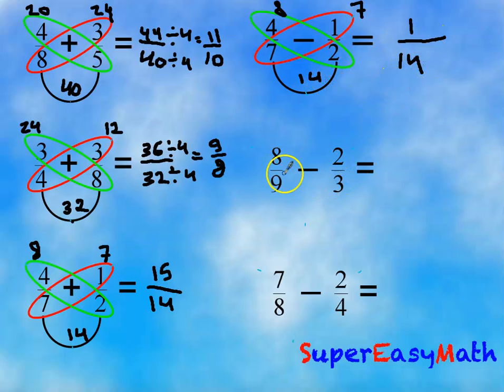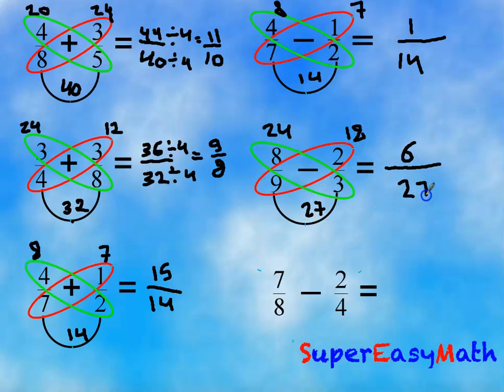Next: 8 over 9 minus 2 over 3. So 3 times 8 equals 24, and 9 times 2 equals 18, over 9 times 3 equals 27. So 24 minus 18 equals 6 over 27. If we divide by 3, we will get 2 over 9.